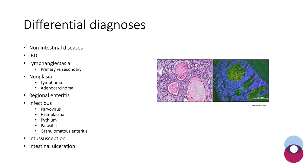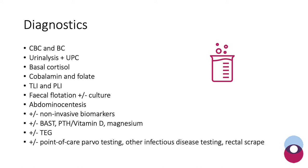Of infectious diseases, Parvo is a very important differential in a young or unvaccinated patient. Depending on travel history, fungal diseases are more commonly seen in America — if the patient comes from around the Gulf, histoplasma and pythium should be considered. Of parasitic causes, Giardia and hookworm or Ancylostoma can also cause PLE-like disease. Intussusception, more typically seen in a young animal, and intestinal ulceration, for example in association with NSAID use, should also be considered.